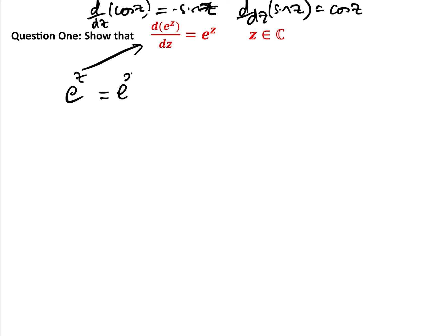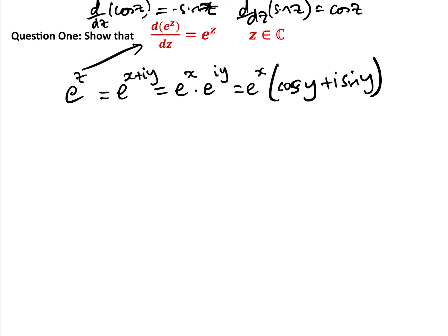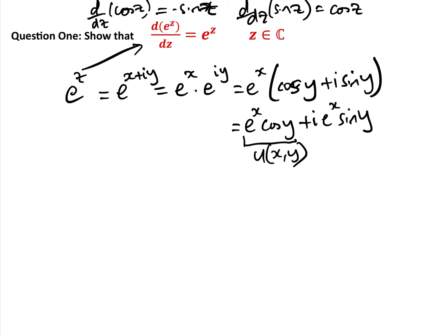So e^z = e^(x+iy), and that equals e^x · e^(iy). Now e^(iy) is the polar form of the complex number cos y + i·sin y. So we can rewrite this as e^x·cos y + i·e^x·sin y. We can identify u(x,y) = e^x·cos y and v(x,y) = e^x·sin y.